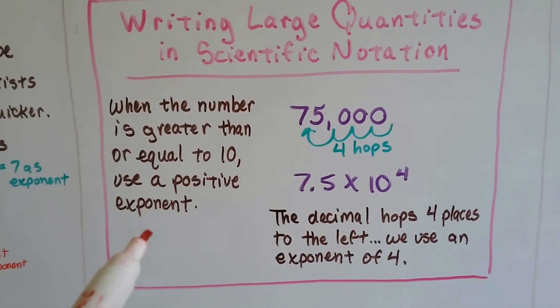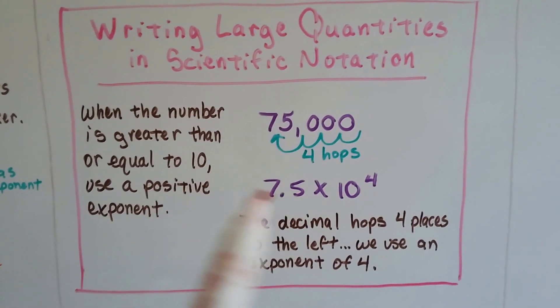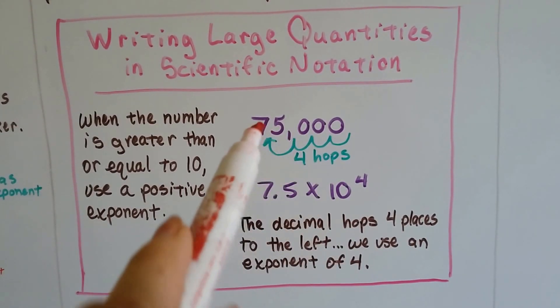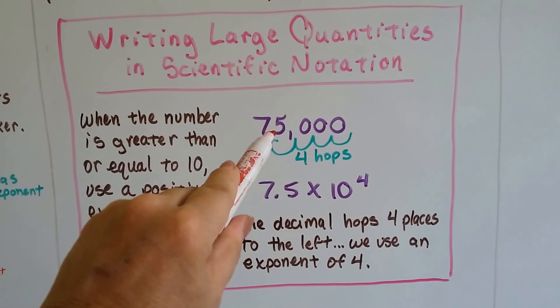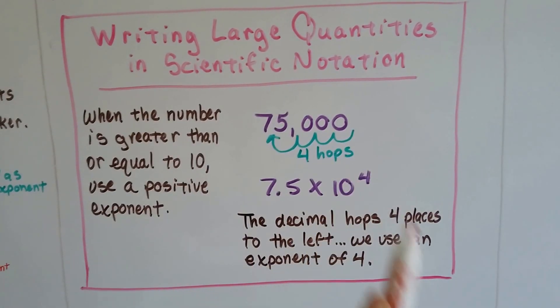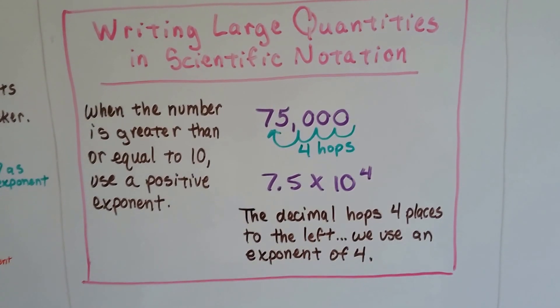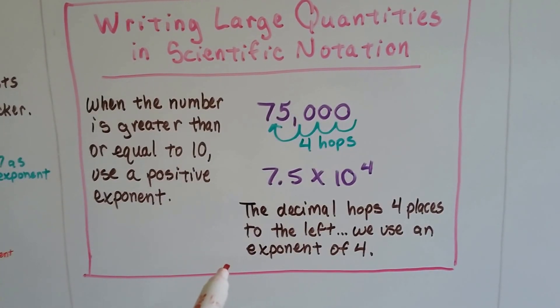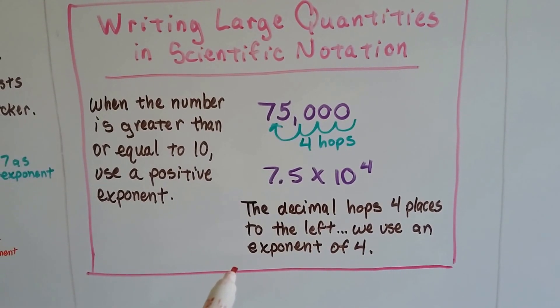For 75,000, the decimal point is here, and we would go 1, 2, 3, 4 hops to get between the 7 and the 5. Those 4 hops end up becoming the number that the exponent will be. The decimal hops 4 places to the left, we use an exponent of 4: 7.5 times 10 to the 4th.